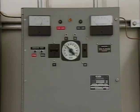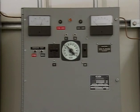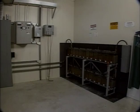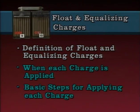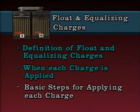A charger may be used to apply two other common types of charges: a float charge and an equalizing charge. These two charges will be described in the next part of this program. Before continuing, stop the tape and read the freshening charge portion of your text, then answer the questions provided. This part of the program will look at the float charge and the equalizing charge — the key points include definitions of each, when each is applied, and the basic steps for applying each.